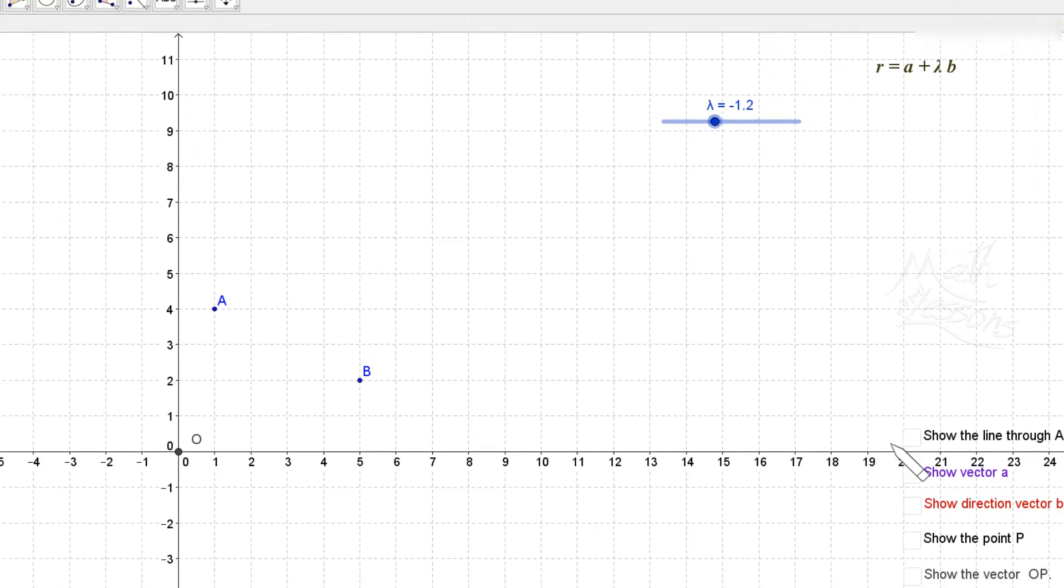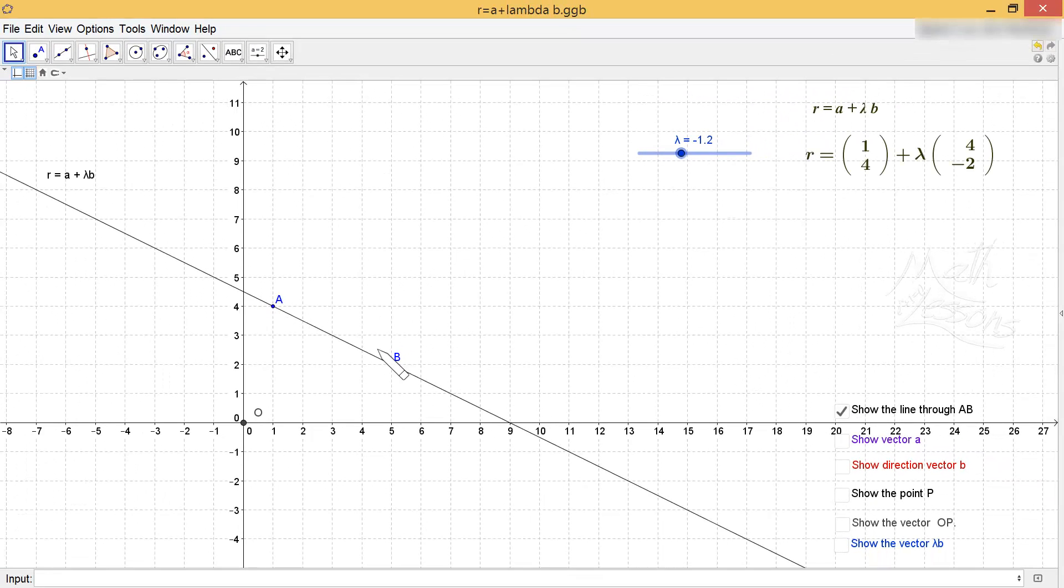So first of all, let's look at the line. We've got line AB, and if we want to find a vector equation of this line, what we need to do is find a way of getting from the origin to the line using a vector. I'm going to use the vector OA to get from the origin to the line. So that's going to go one along and four up.